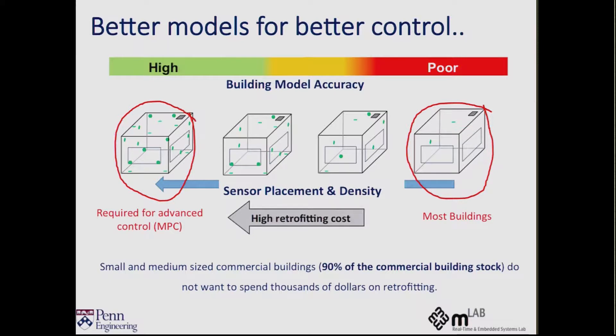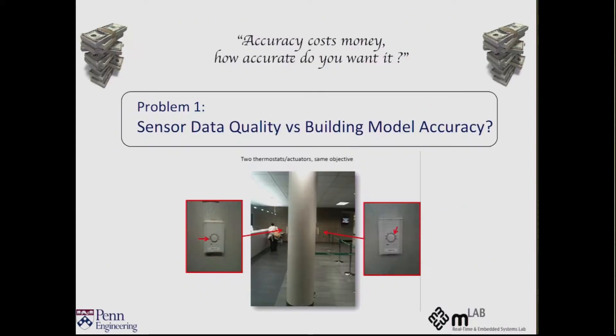Also any small or medium scale commercial building would be very reluctant in investing several thousand dollars, which is quite a significant portion of their electricity bill, to just retrofit without knowing beforehand what's the cost benefit of adding additional sensors to their space. So there's definitely a trade-off between the data quality that you can obtain by adding additional sensors and the accuracy of the model that you intend to learn from those sensors. And that's one aspect that we want to address.